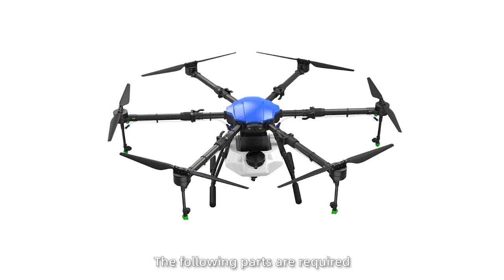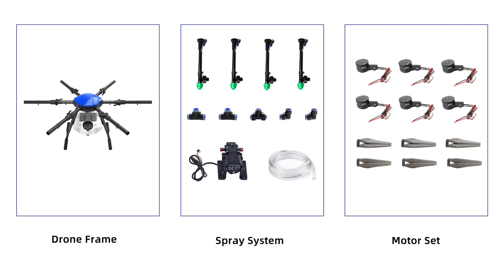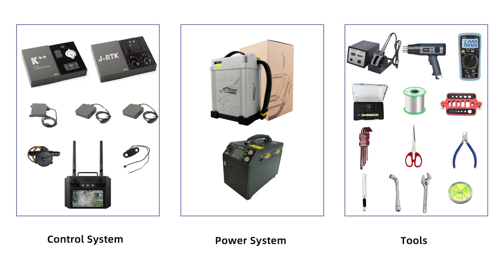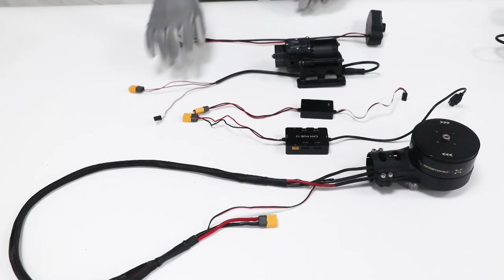To install an agriculture drone, the following parts are required: drone frame, spray system, motor set, control system, power system, and some necessary tools.